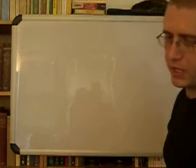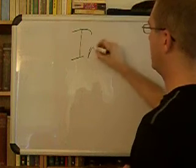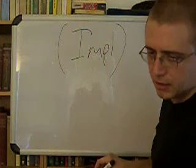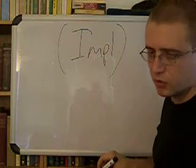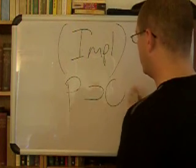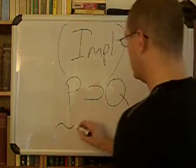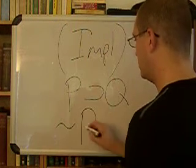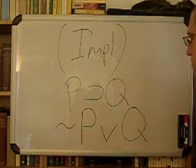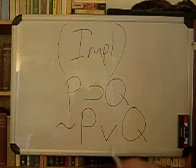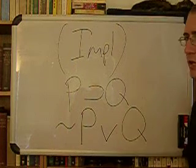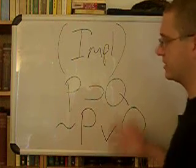Next we have implication, abbreviated IMPL. This is: if P then Q. This is an interesting one — P then Q can turn into not P or Q. That's by implication. It looks strange right now, but we're just getting the rules down, so don't worry too much about whether it makes sense yet.